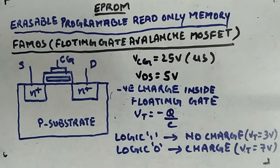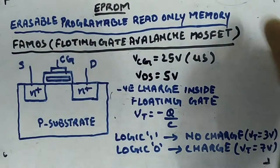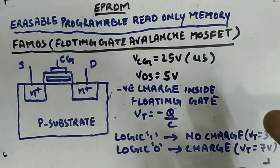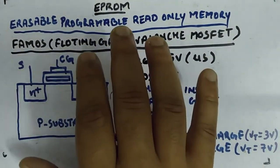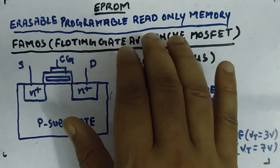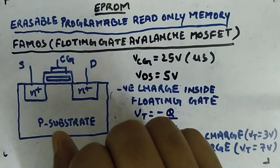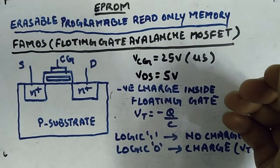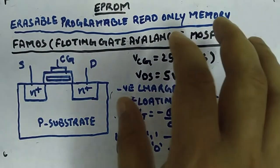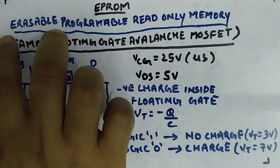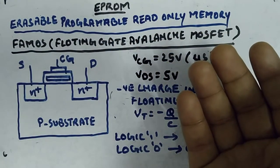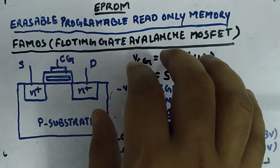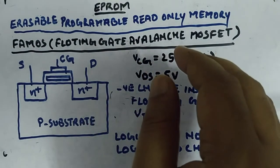EPROM is another type of memory, also known as Erasable Programmable Read-Only Memory. It is erasable — that is its speciality. We have seen programmable read-only memory in PLDs when learning about programmable logic devices. Here, the erasable programmable read-only memory means you can erase it, rewrite it again, and reuse it.